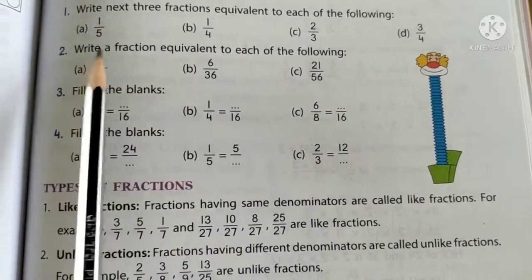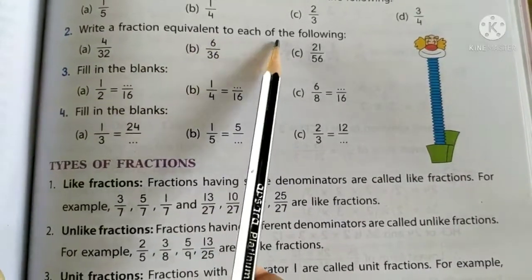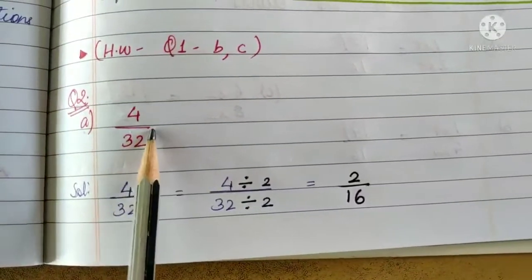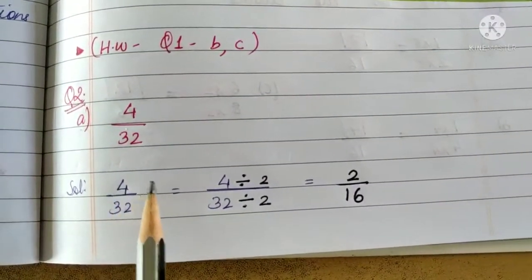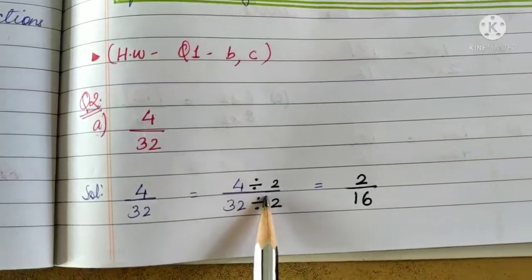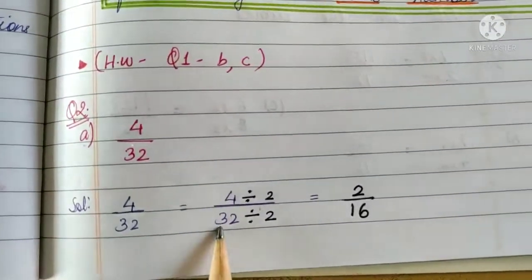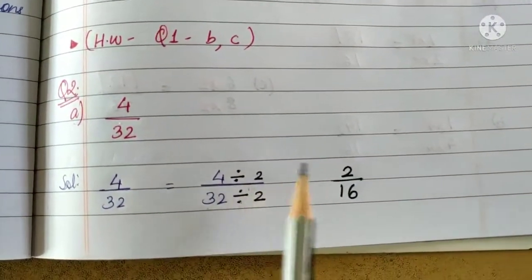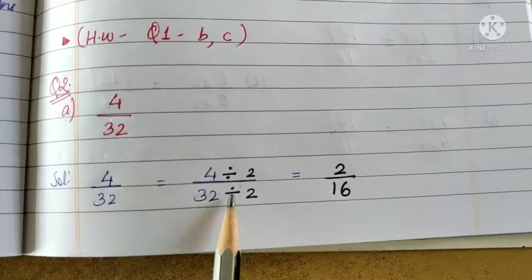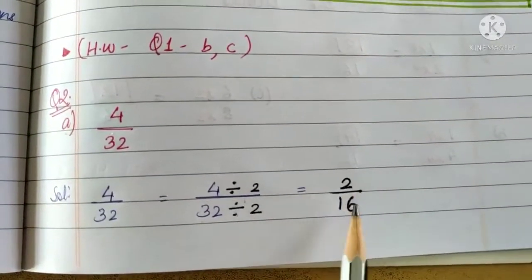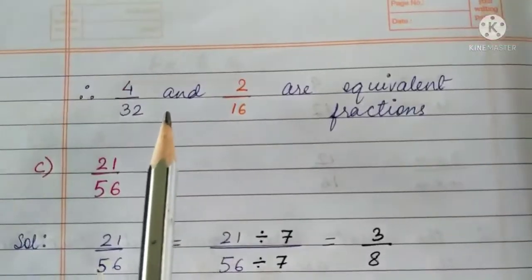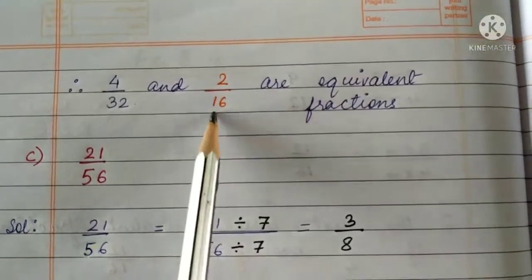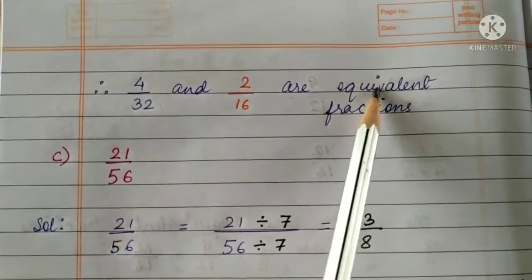Question 2: Write a fraction equivalent to each of the following. Part A is 4 by 32. Here, children, we will use the division method — that is, we will divide the numerator and the denominator by the same number. We have taken 2: 4 divided by 2 equals 2, and 32 divided by 2 equals 16. So the fraction obtained is 2 by 16. Therefore, 4 by 32 and 2 by 16 are equivalent fractions.